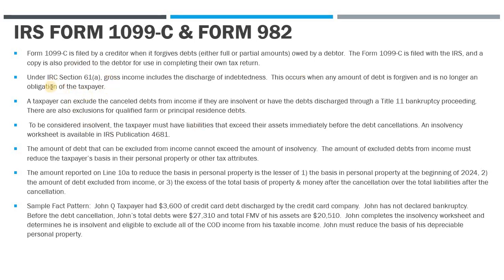Under Section 61(a) of the tax code, gross income specifically includes the discharge of indebtedness. So if you have canceled debt income, that is gross income that should be included on your tax return and subject to tax unless an exclusion applies. One of the more popular ways to exclude this debt is to claim insolvency. Insolvency doesn't mean you went through bankruptcy court — anybody can be insolvent simply by looking at the makeup of their liabilities and assets. Insolvency generally means your liabilities exceed your assets immediately before the debt cancellation.